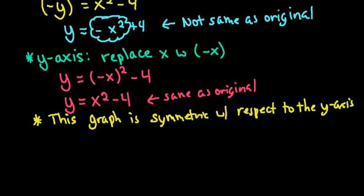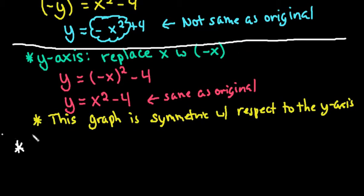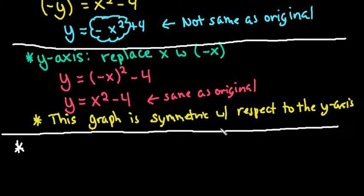The last one that we're going to test algebraically is, because you always want to test all of them. We already got a no for the first one, but just this way that you can see how do we test for all of them. The last one we're going to test for is with respect to the origin.